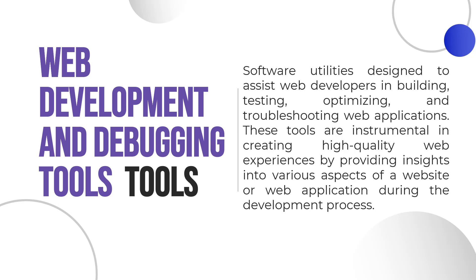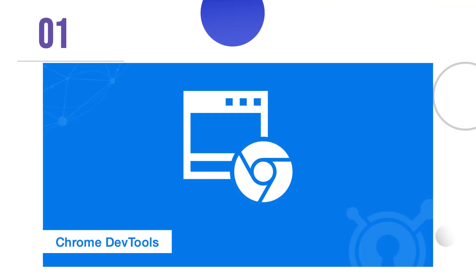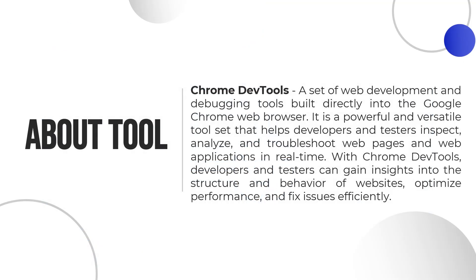The most popular web development and debugging tools available for desktop are Google Chrome DevTools, Mozilla Firefox Developer Tools, Microsoft Edge Developer Tools, Apple Safari Web Inspector, and Opera Developer Tools. In this course, we will have a separate video on Google Chrome DevTools. Chrome DevTools is a set of web development and debugging tools built directly into the Google Chrome web browser. It's a powerful and versatile toolset that helps developers and testers inspect, analyze, and troubleshoot web pages and web applications in real-time.